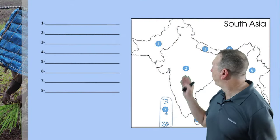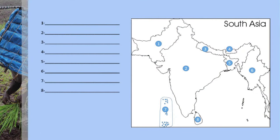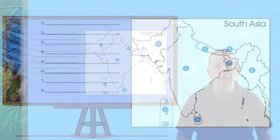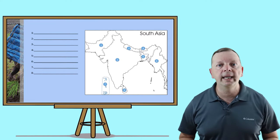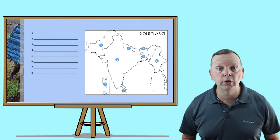First of all, there is number one, which is Pakistan. There's number two, which is India. There is number three, which is Nepal. Number four is Bhutan. Number five is Bangladesh. Number six is Myanmar — we'll talk about that more when we discuss Southeast Asia. Then we have our two island countries: number seven is the Maldives, which is an archipelago or group of islands, and number eight is Sri Lanka. If you look at the shape of Sri Lanka, you'll understand why it has earned the nickname 'the teardrop of India.'